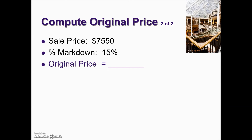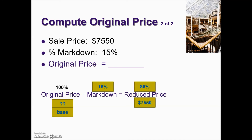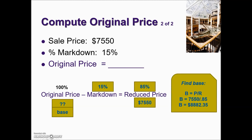Another problem similar to the last one: we're given the sales price and the percentage markdown, and the goal is to find the original price. Because 100% is associated with the original price, that's the location of our base. A markdown of 15% means the reduced price is the complement: 100% minus 15% is 85%, and we know that dollar amount — the reduced price is $7,550. We have a rate, a part, and we're looking for the base. Base equals part divided by rate expressed as a decimal, giving us an original price of $8,882.50.